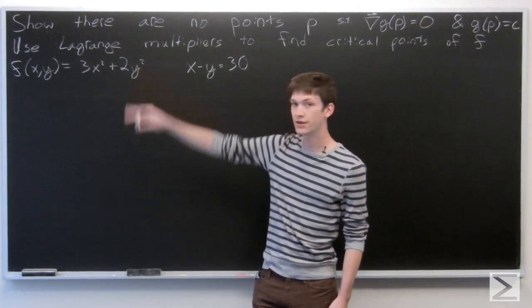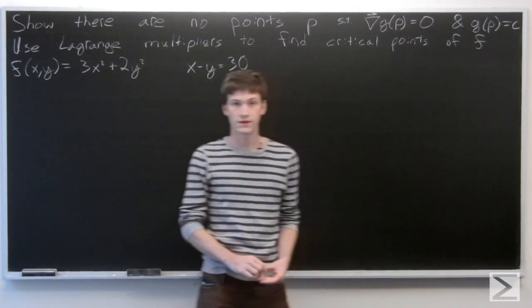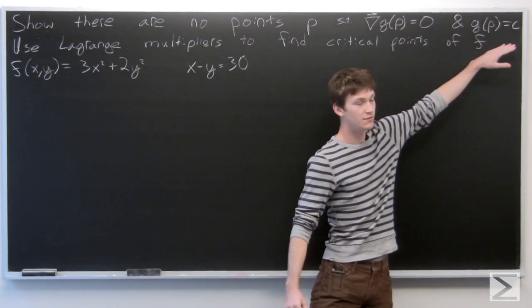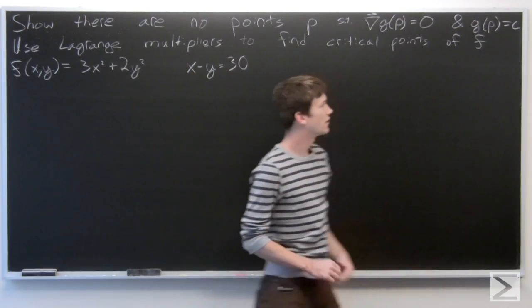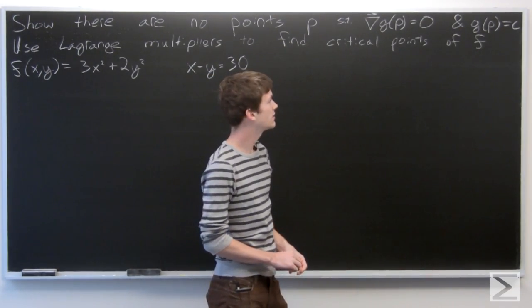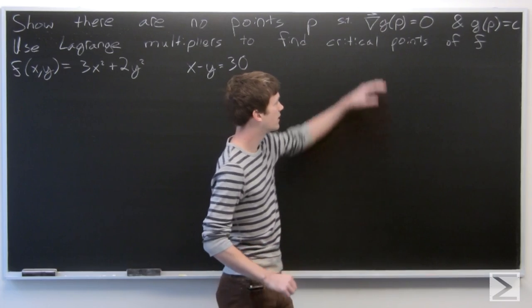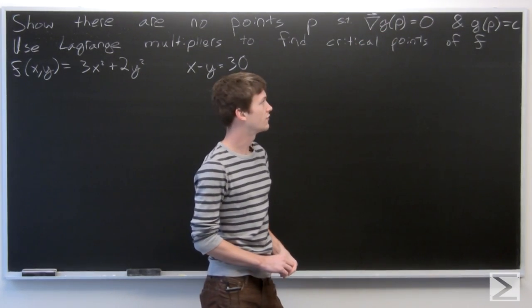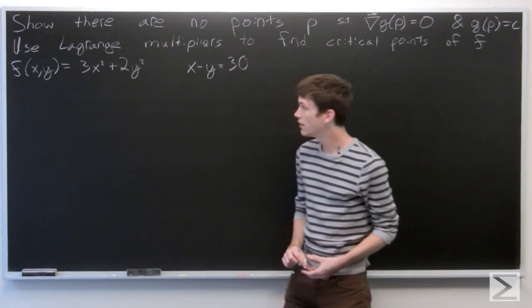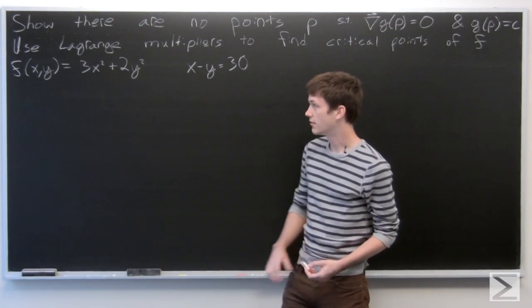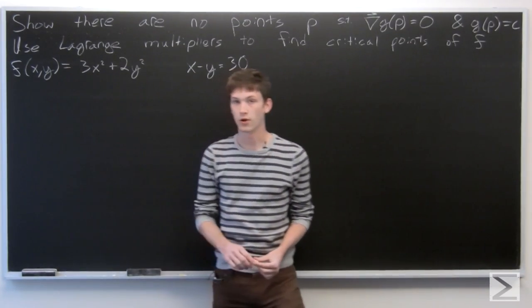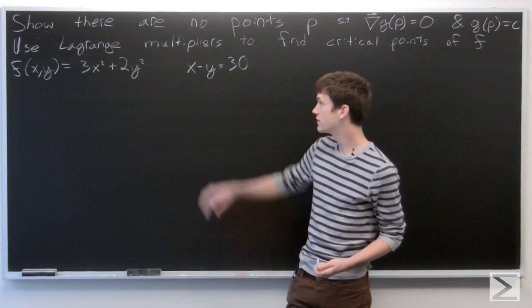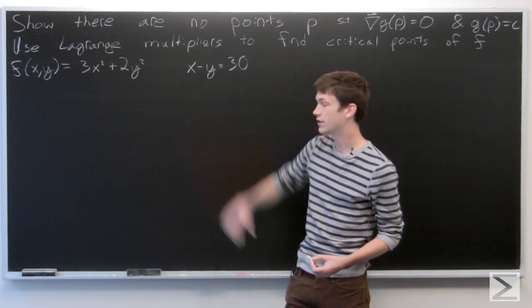In this problem, we're asked to show that there are no points satisfying our constraint g of p equals c where the gradient vector of g is equal to 0. And then after we've done so, we can use Lagrange multipliers to find the critical points of f subject to our constraint g.